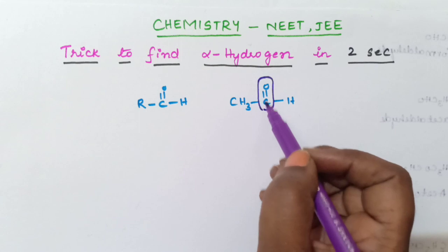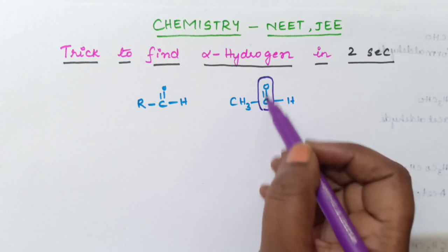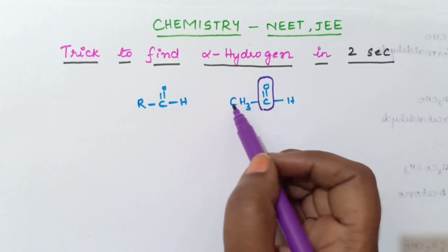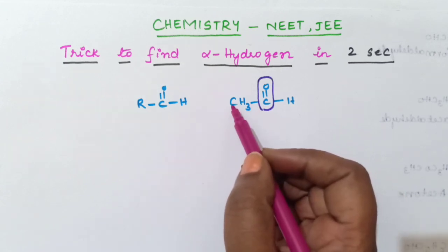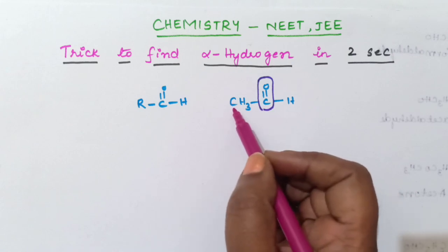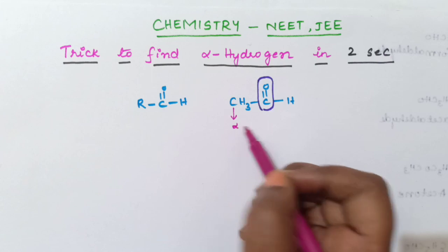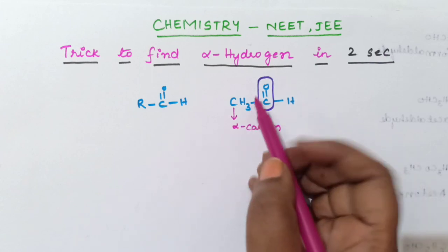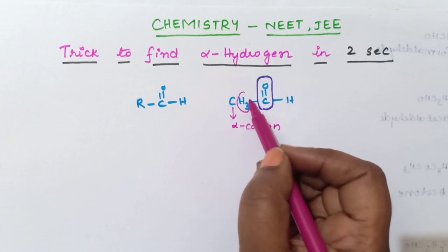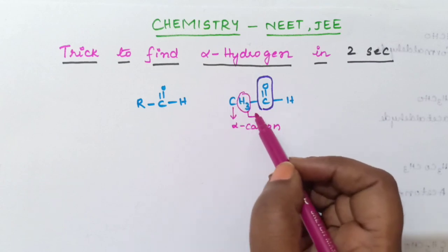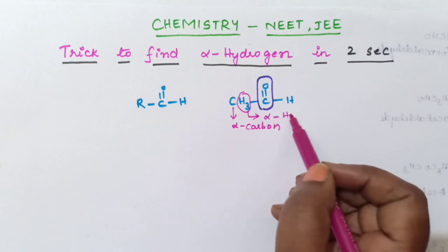C double bond O is called the carbonyl group. The carbon next to this carbonyl carbon is called as alpha carbon. And the hydrogen atoms which are attached to this alpha carbon are called as alpha hydrogen.